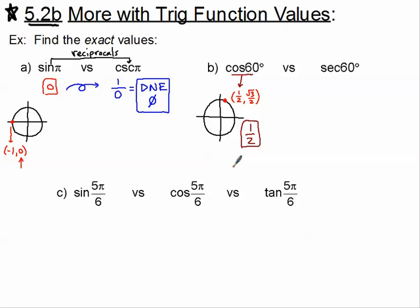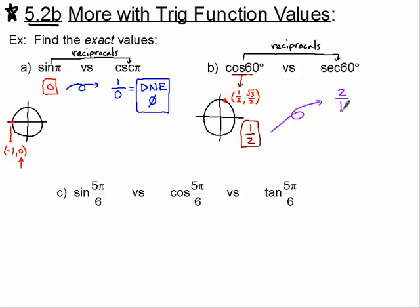For the secant, we need to remember the relationship between cosine and secant — they are also reciprocals. If I can find either one of these values, I just flip it upside down to get the other. So I'm going to take the one-half and take the reciprocal. I don't really like two over one, so we'll just write it as two. So the secant of 60 degrees is 2.